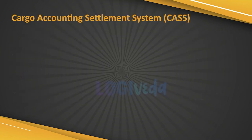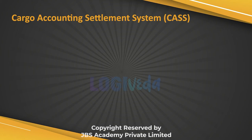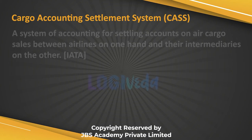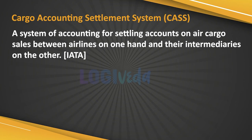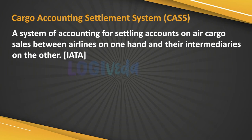CASS (Cargo Accounting Settlement System): This is a system of accounting for settling accounts on air cargo sales between airlines on one hand and their intermediaries on the other.